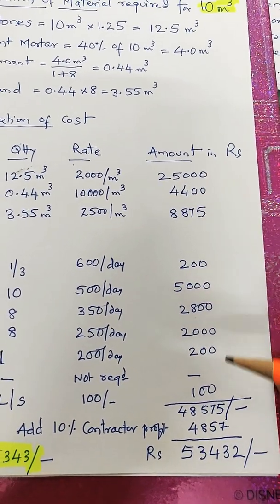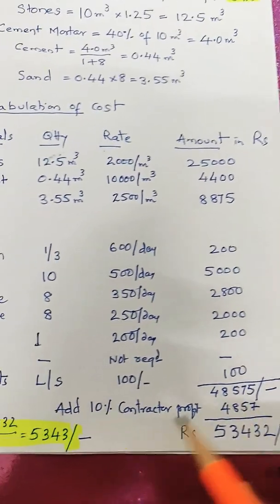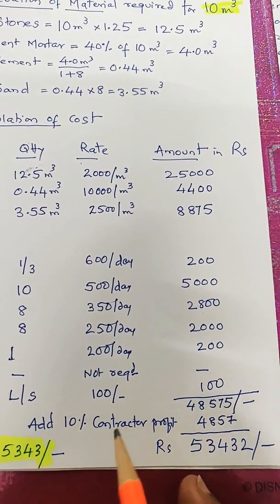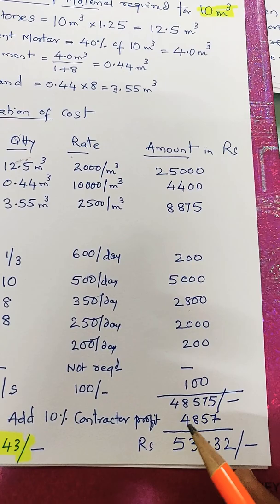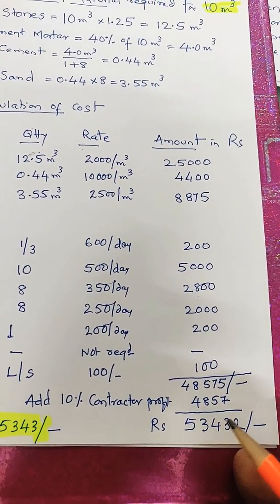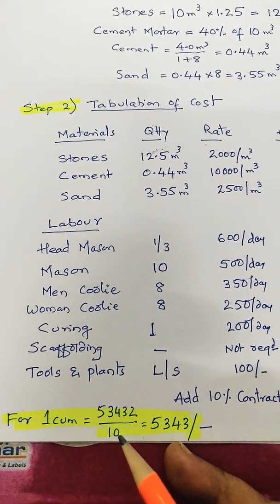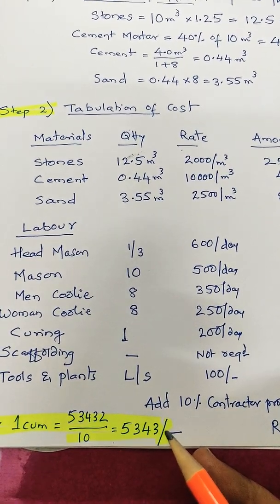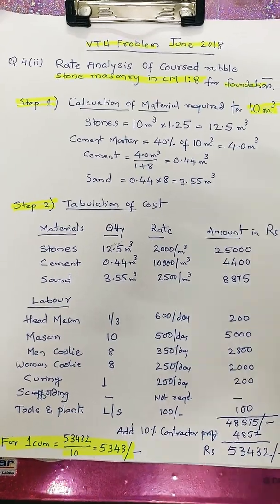Tools and plants — ₹100 required. The total comes to ₹48,575. Adding 10% contractor's profit (water charges need not be added), that is ₹4,857, giving a grand total of ₹53,432. Divided by 10 m³, the rate per 1 m³ comes to ₹5,343. This question carries 5 marks. Thank you.